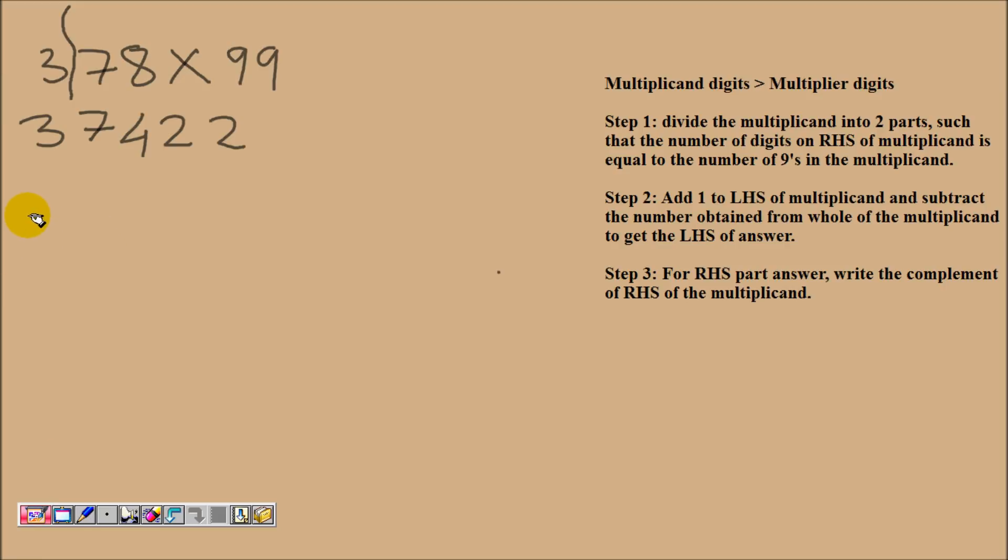Let's do it with another example. Let's say we have another number 4276 and we are going to multiply it with triple 9. Here we have 3 nines, so we will divide it like this. Now we have 3 digits in the left hand side.